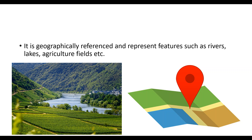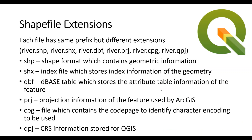Another important thing related to shapefiles, and why we use them, is that they are always geographically referenced. That means we can show or plot them on a map and we exactly know the location of that specific geographic feature represented by the shapefile. Normally they represent river bodies, lakes, agriculture fields, houses, or roads, etc.